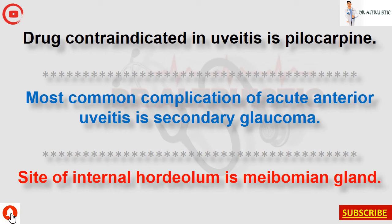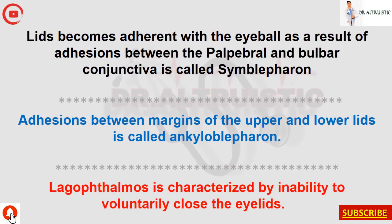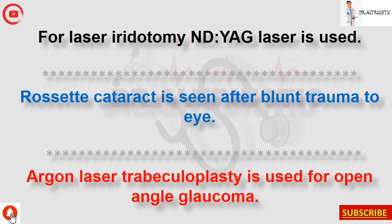Site of internal hordeolum is the meibomian gland. Lids becoming adherent to the eyeball due to adhesions between palpebral and bulbar conjunctiva is called symblepharon. Adhesions between margins of the upper and lower lids is called ankyloblepharon. Lagophthalmos is characterized by inability to voluntarily close the eyelids. For laser iridotomy, Nd:YAG laser is used. Rosette cataract is seen after blunt trauma to the eye.